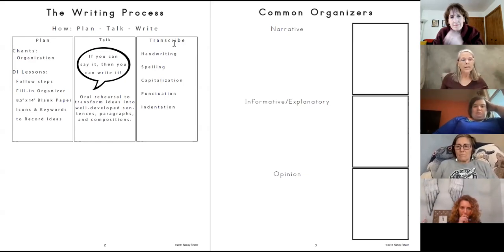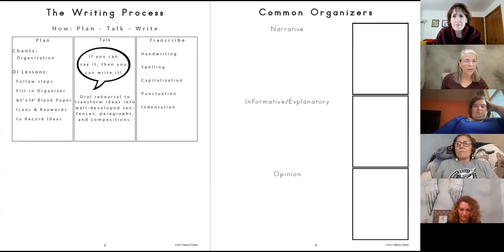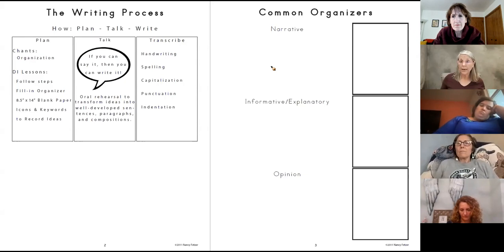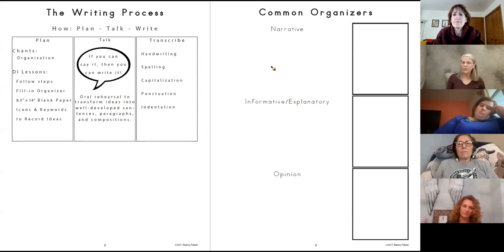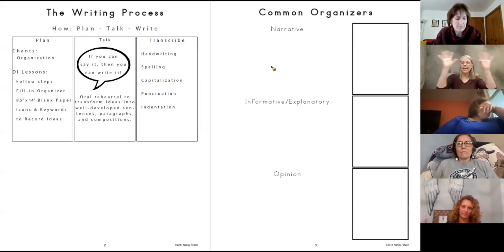Let's talk about planning narrative, informational, or opinion writing. I have chants to identify the parts of all three types of writing, because if you're going to write these types of text, you have to know the structure before you start. All three types of writing have something at the beginning, something in the middle, and something at the end.